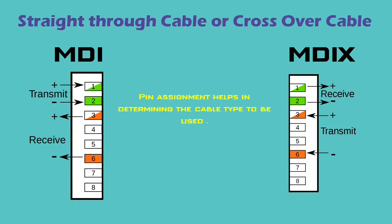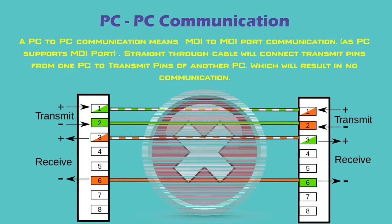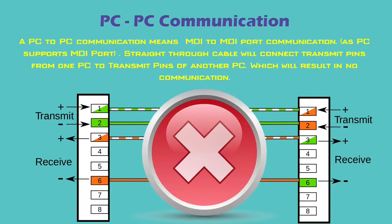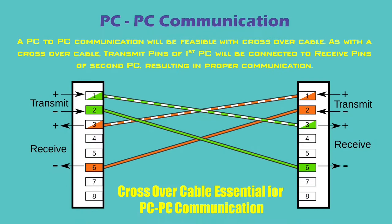Now that we are clear about the pin assignment of the two types of port, we can easily select which kind of cable — either straight-through or crossover — to use for connecting different devices. If we are planning to connect a computer to another computer, both will have MDI ports, as PC NIC cards support MDI ports. Both sides' transmit pins will be 1 and 2, and both sides' receive pins will be 3 and 6. If we use a straight-through cable connecting pins 1 to 8 sequentially, communication won't happen. We need to use a crossover cable, where wires from pins 1 and 2 on one side are connected to pins 3 and 6 on the other side. This way, communication will be possible.